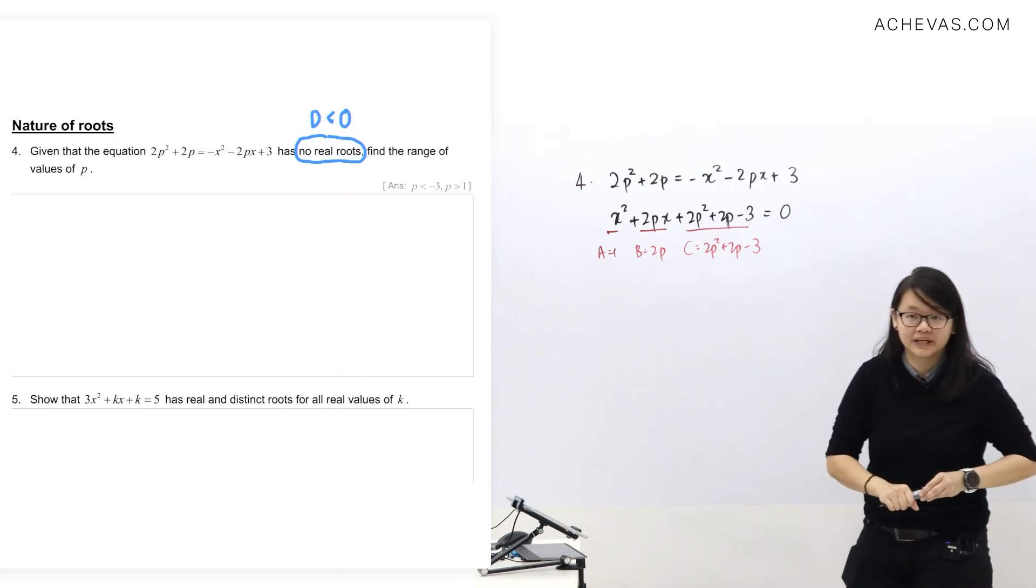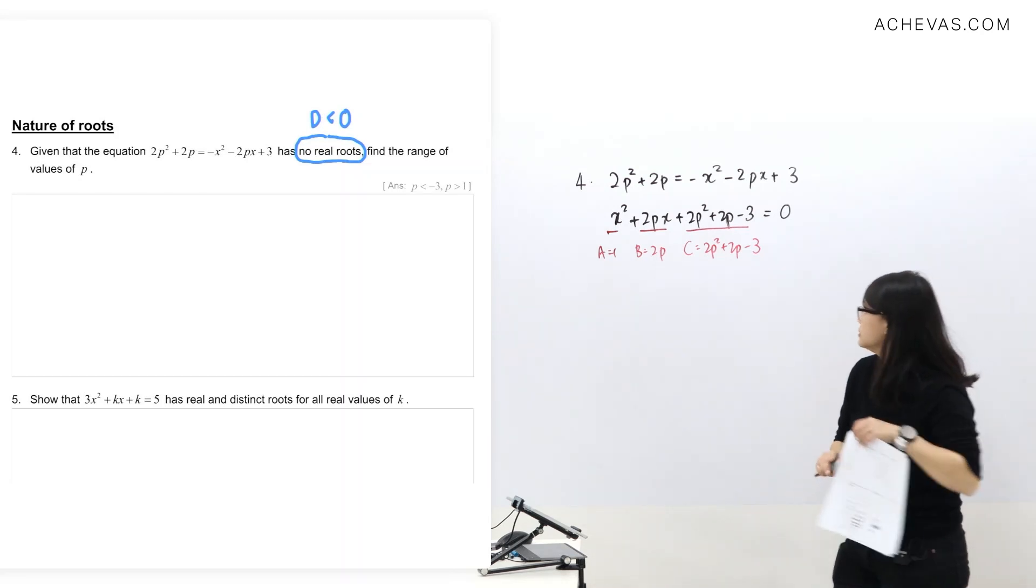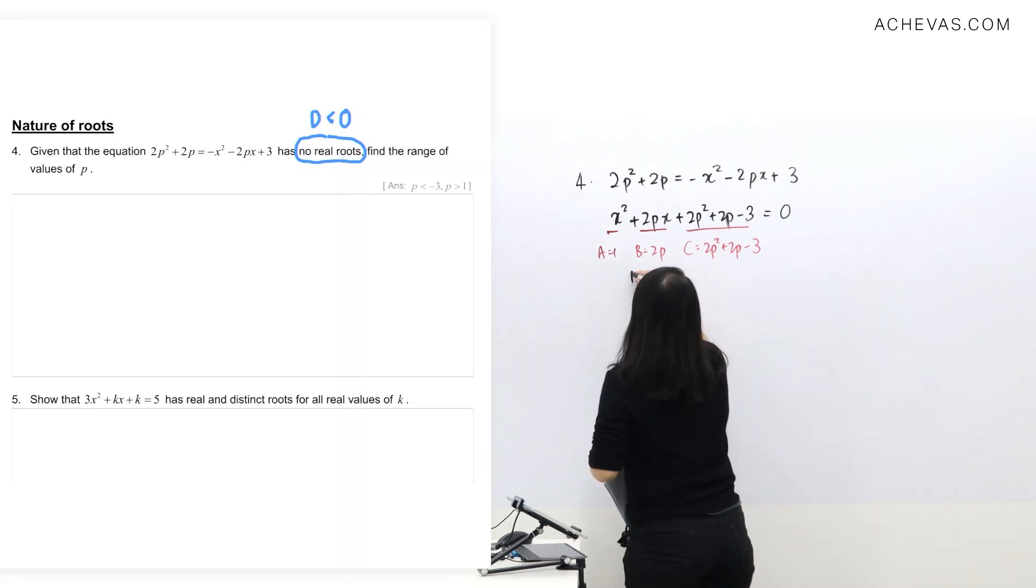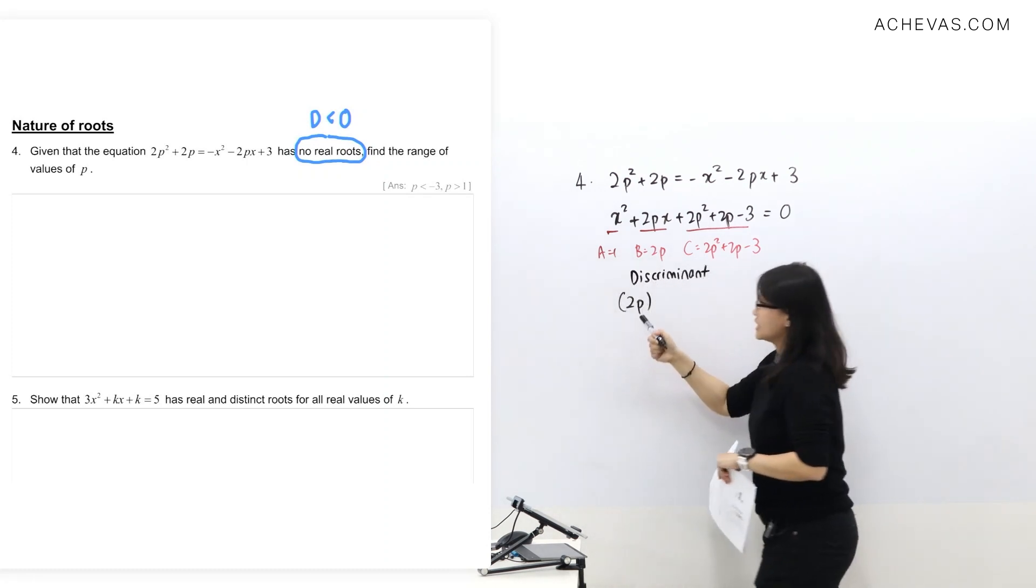The common mistake is you need a bracket because it's the whole thing squared. So make sure you do that.